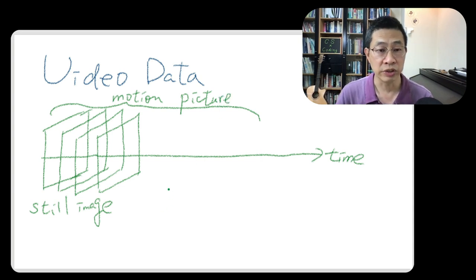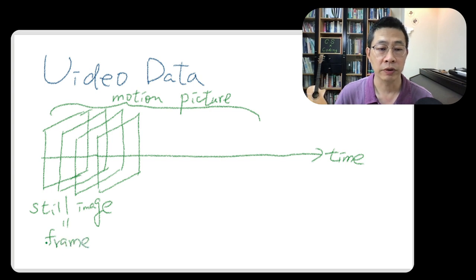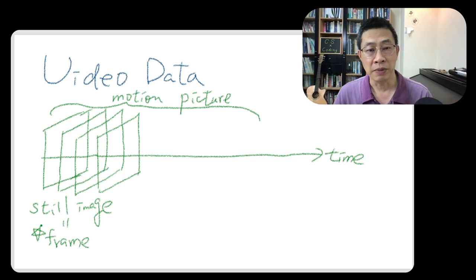Motion means moving, and each of these images sometimes we call a frame. We have a special name for it, like a framework, but it's a frame. Literally it's a still image. If you watch only a single frame, it's just like this, still, not moving.